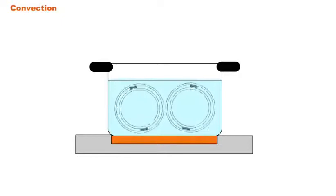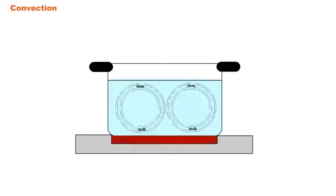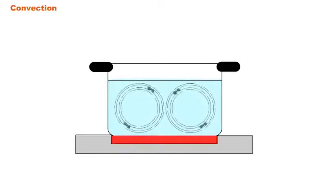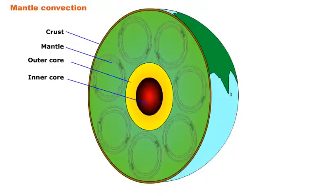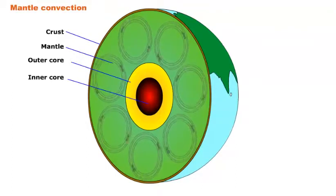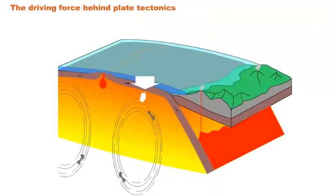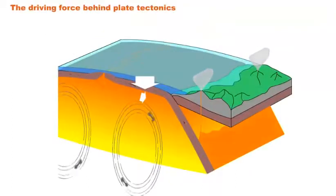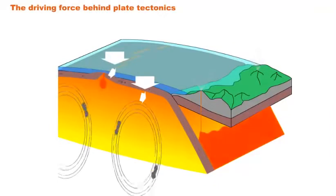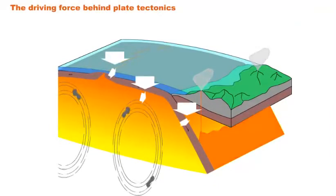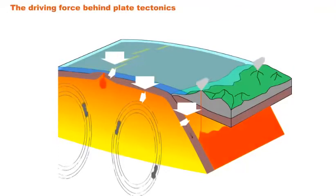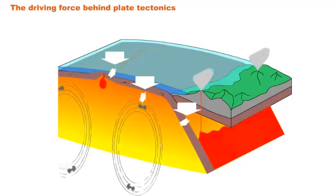The driving force behind plate tectonics is convection currents. Applying those convection currents in the mantle, which is a fluid-like material, we can see how they drive the plates sitting above it. What we want to look at now is what happens at these boundaries because of these convection currents.